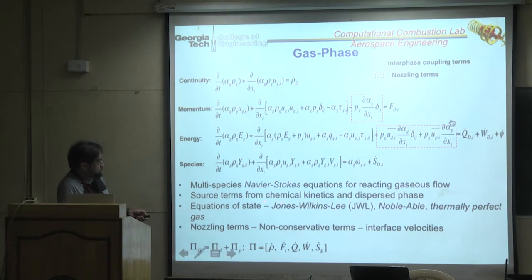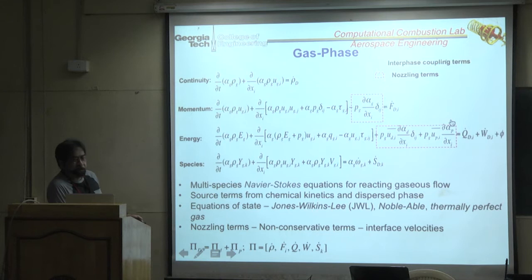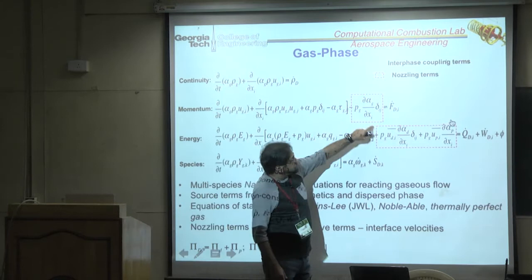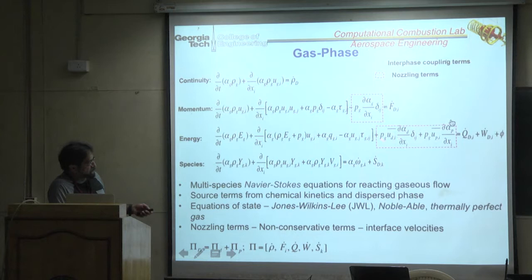The nozzling terms are well-derived and represent the interface velocity between the two phases. Many two-phase codes don't have them and sometimes you don't need them for dilute problems, because these are gradients of volume fraction — if it's very dilute there's really no significant gradient to include.